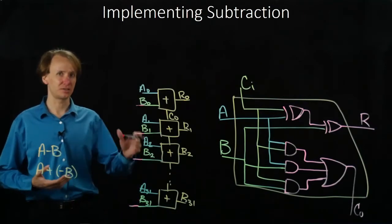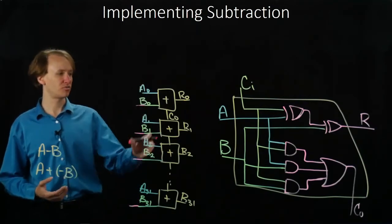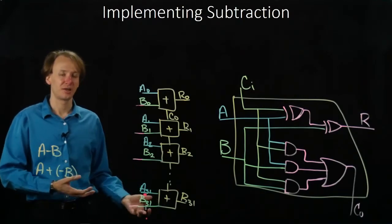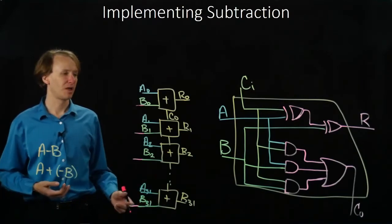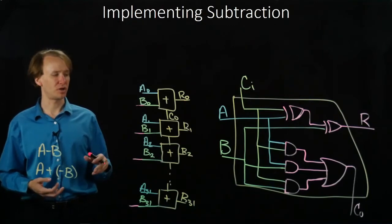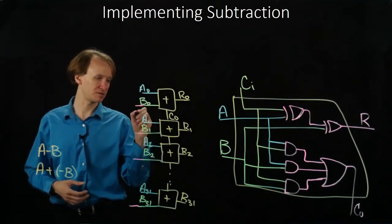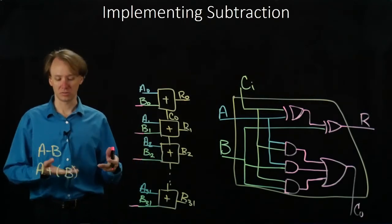But since I'd rather not waste the gates and produce two different adders, one which does addition, the other does subtraction, and then choose the results of them, I'm actually going to choose whether I do addition or subtraction just by choosing whether I pass in B or negative B.